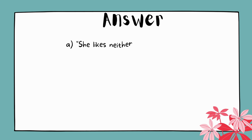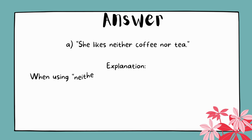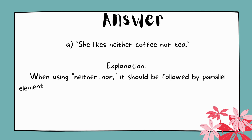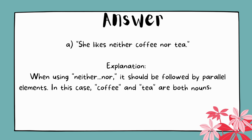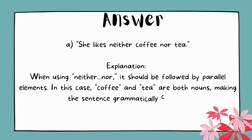The answer is A. She likes neither coffee nor tea. Explanation: When using 'neither...nor,' it should be followed by parallel elements. In this case, 'coffee' and 'tea' are both nouns, making the sentence grammatically correct.